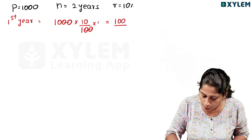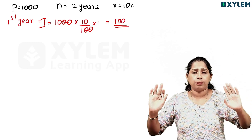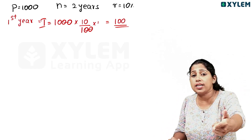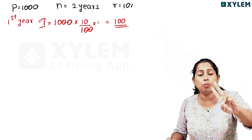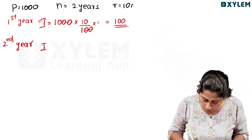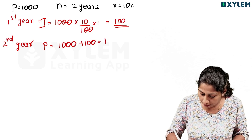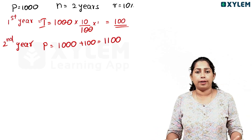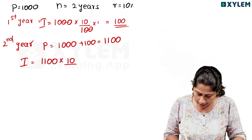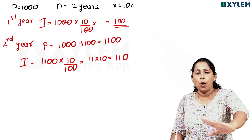First year: interest on Rs. 1000 at 10% equals Rs. 100. So the principal for the second year becomes 1000 plus 100 equals Rs. 1100. Second year: interest on Rs. 1100 at 10% equals 11 into 10 equals Rs. 110.